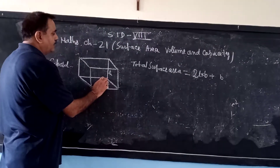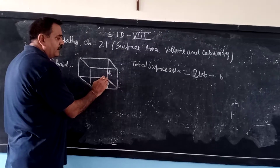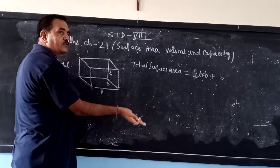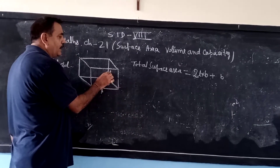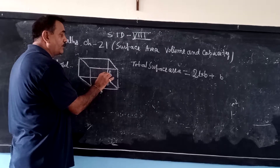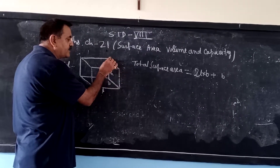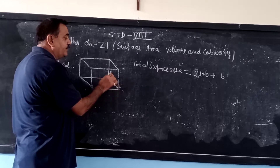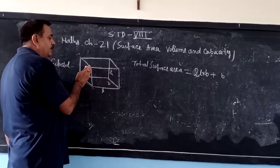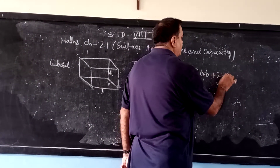Plus this side and this side — again two faces. If we keep this face on the floor, it is also a rectangle. The area of this rectangle shape is breadth into height. Like that there are two faces — breadth into height and breadth into height — so it becomes twice breadth into height.